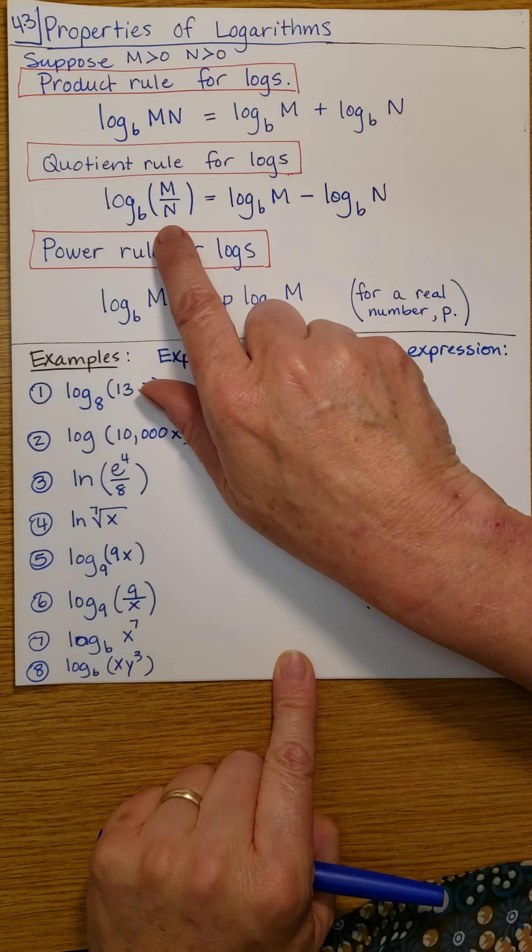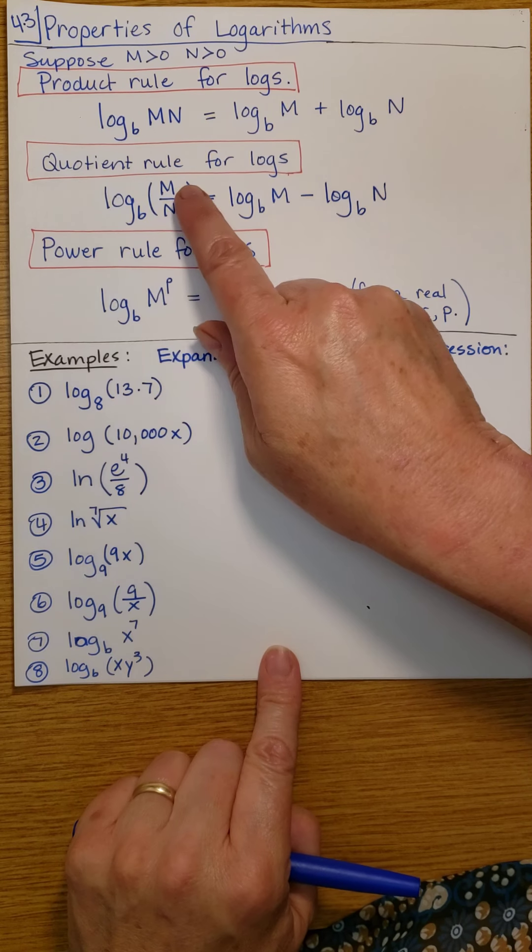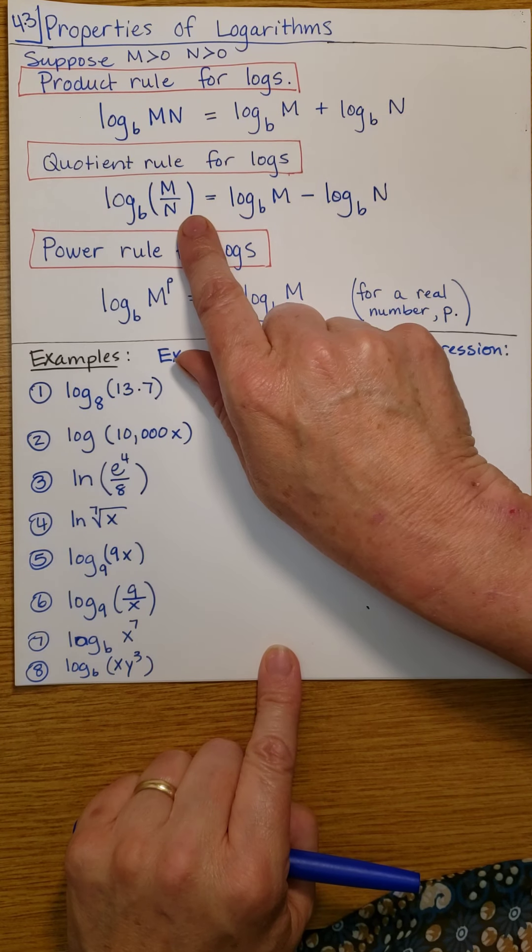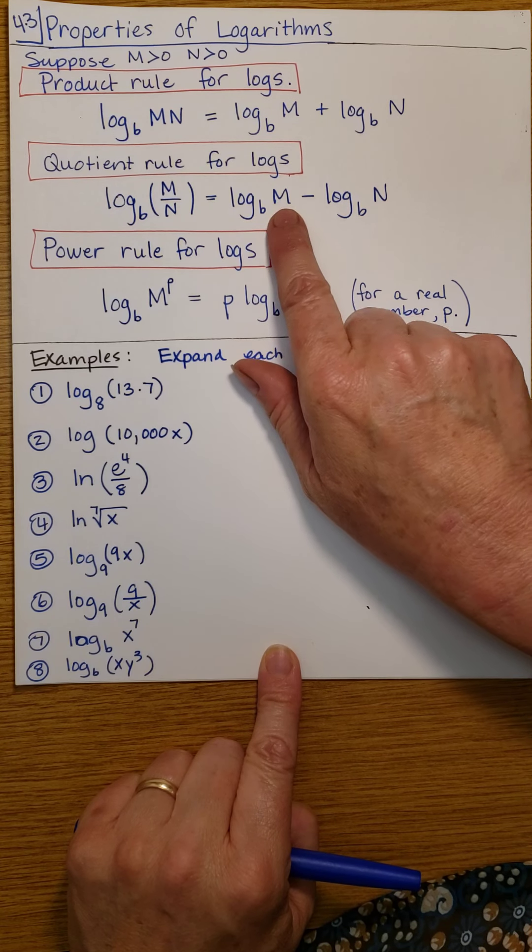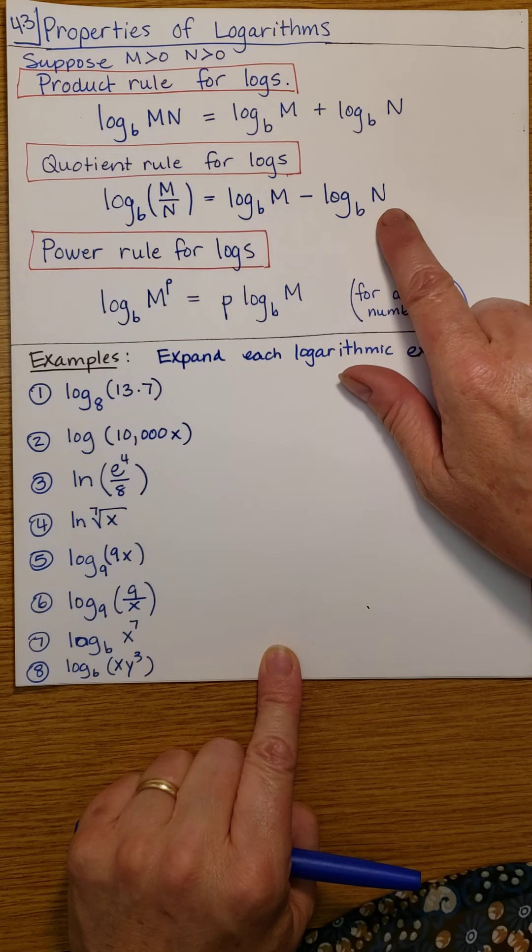Similarly, if you're taking the log with base b of a quotient, then that becomes log base b of the numerator minus log base b of the denominator.